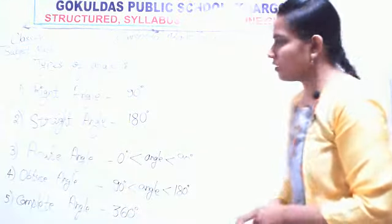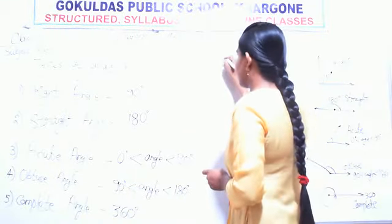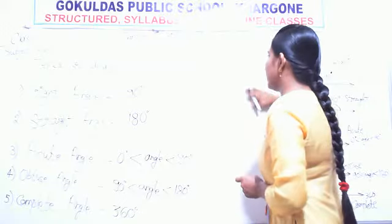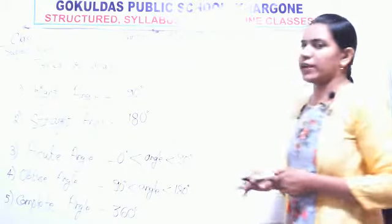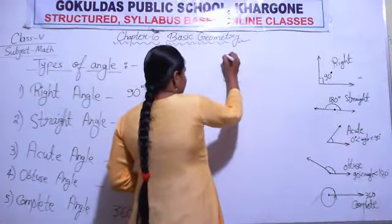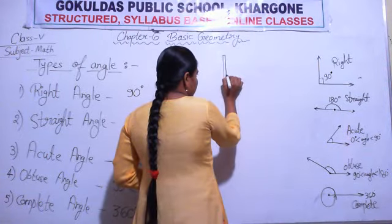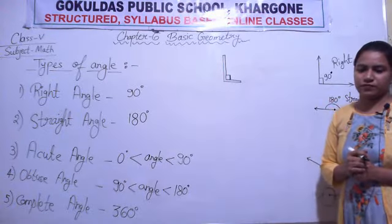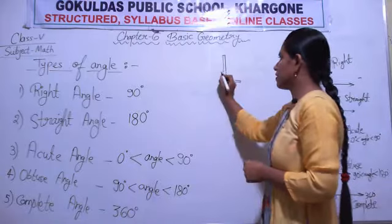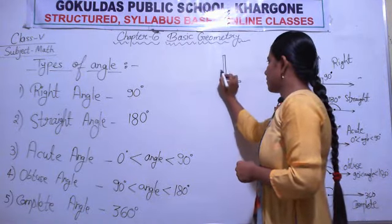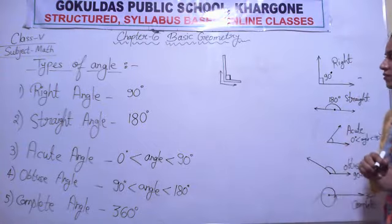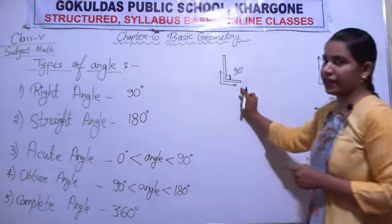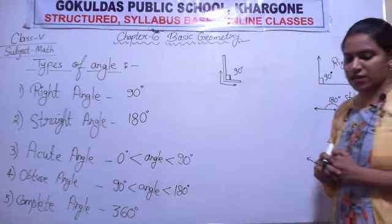Now I am drawing some alphabet letters so that you can identify angles in them. If I draw the letter L, can you identify which angle is formed between these two perpendicular lines? It is showing 90 degrees — it means it is a right angle.